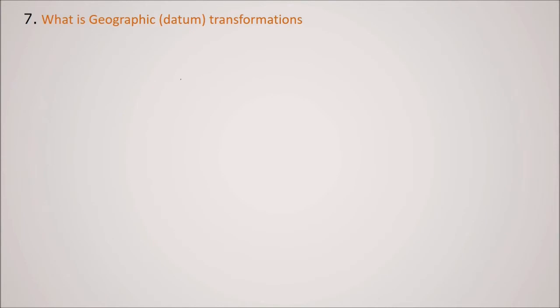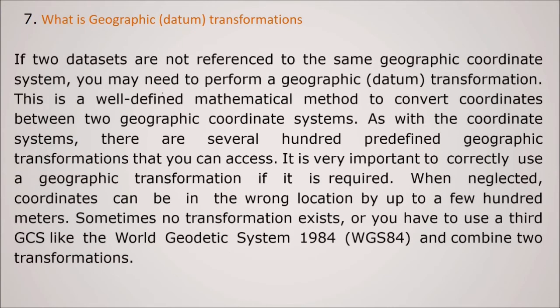What is data or geographic transformation? If two data sets are not referenced to the same geographic coordinate system, you will need to perform certain data transformation or geographic transformation. So this is a well-defined mathematical model. There is a mathematical model to convert coordinates between two GCS. So as with the coordinate system, there are several hundred predefined geographic coordinates that you can access. So it is very important to correctly use this geographic transformation if it is required. And if you neglect, coordinates can be in the wrong location by up to few hundred meters. Sometimes no transformation exists. So you have to use a third GCS like WGS84, World Geodetic System 1984 and combine two transformations.